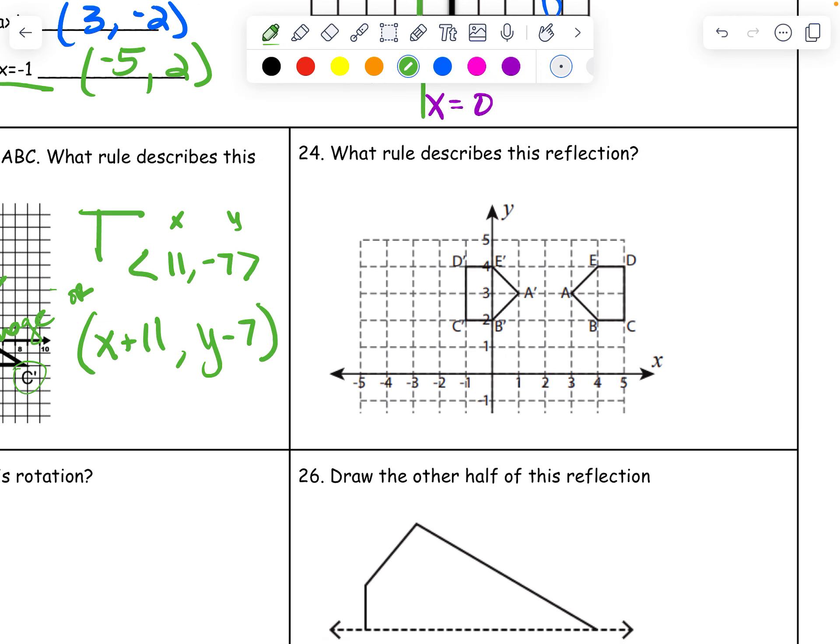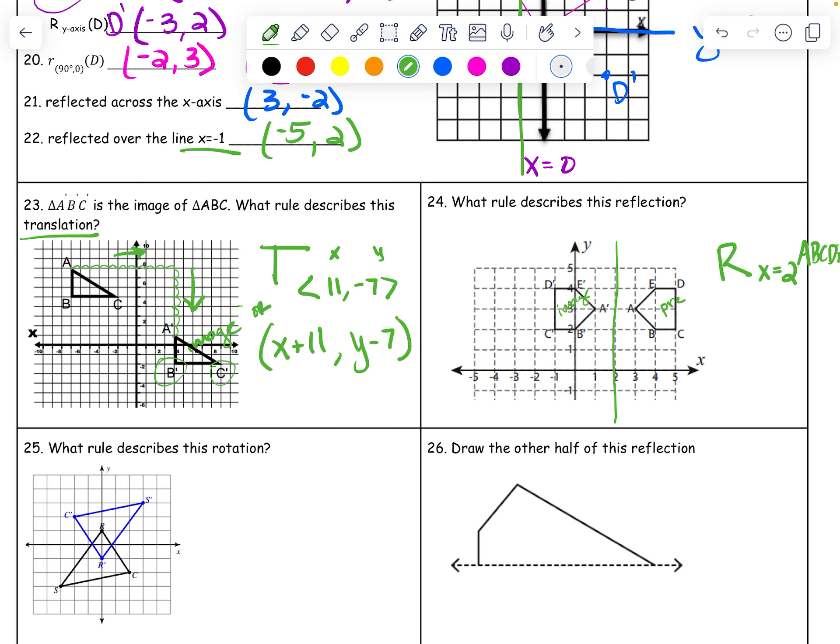All right. What rule describes this reflection? So this is my pre. This is my image. Reflection is a capital R over that line. Looks to be the mid. So what is that? X equals 2 of A, B, C, D, E. I've run out of space. But yes. Reflect over X equals 2. That's what you need to be able to do there.